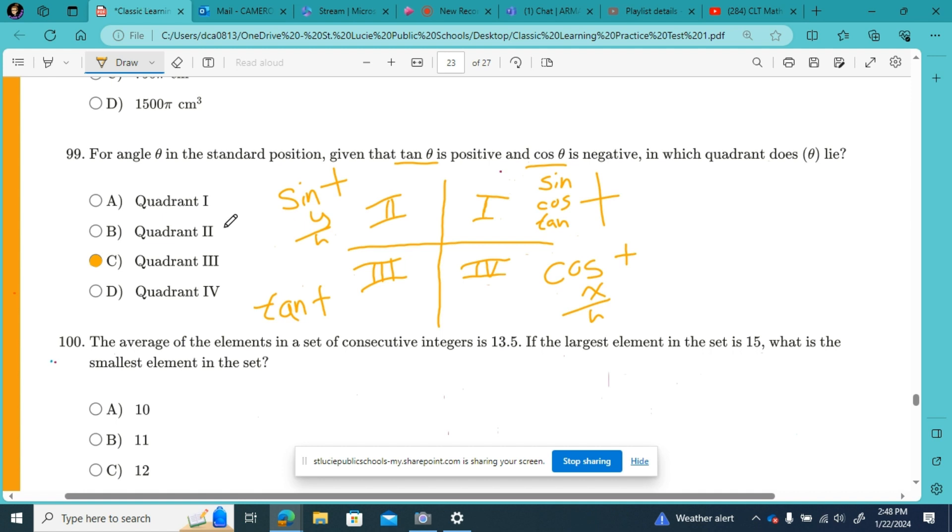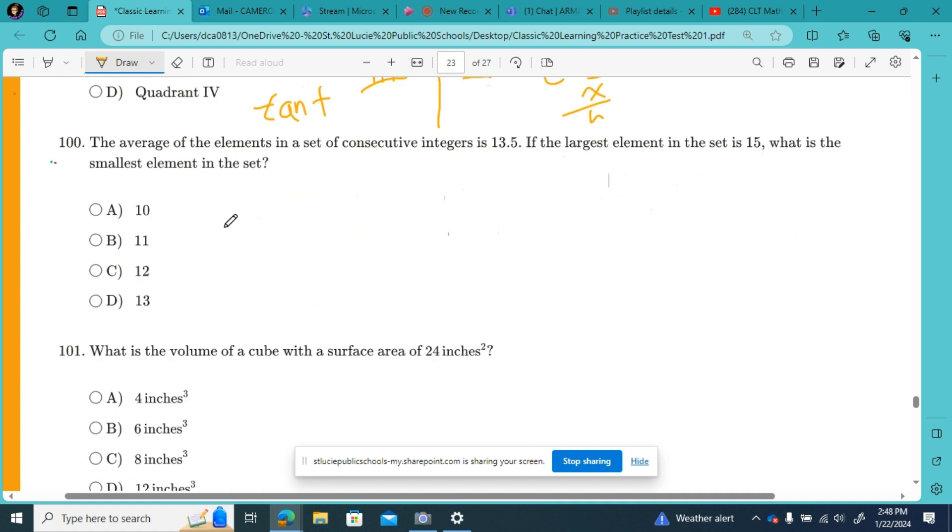Number 100, the average of the elements in a set of consecutive integers is 13.5. The average is 13.5, the largest is 15, and our question asks what is the smallest? So smallest to largest, and we know our average would be in the middle.